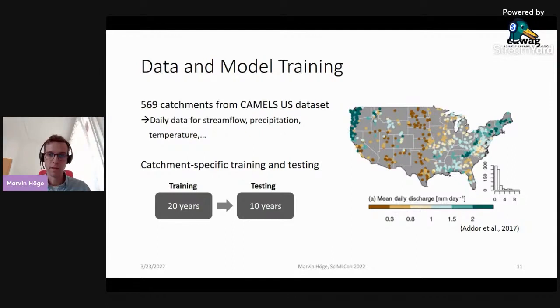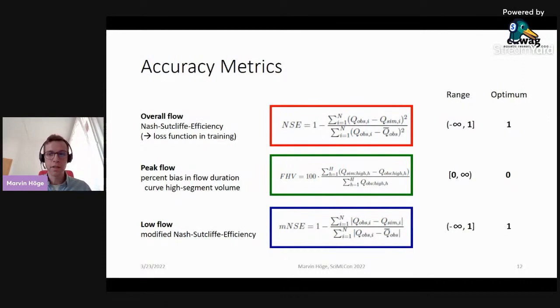Therefore, we used three criteria to measure accuracy in different flow regimes. First, we used the so-called Nash-Sutcliffe efficiency to assess overall flow prediction performance. And this one is based on squared residuals and has the optimal value one. This was also our loss function in training, so the model was optimized for overall flow. During testing, we also used something called percent bias in flow duration curve, high segment volume, to assess peak flow bias. As bias measure, the optimum is of course zero. Finally, we measured low flow performance with a modified NSE that takes the absolute rather than the squared residuals, but has the same range and optimum as the original Nash-Sutcliffe efficiency.